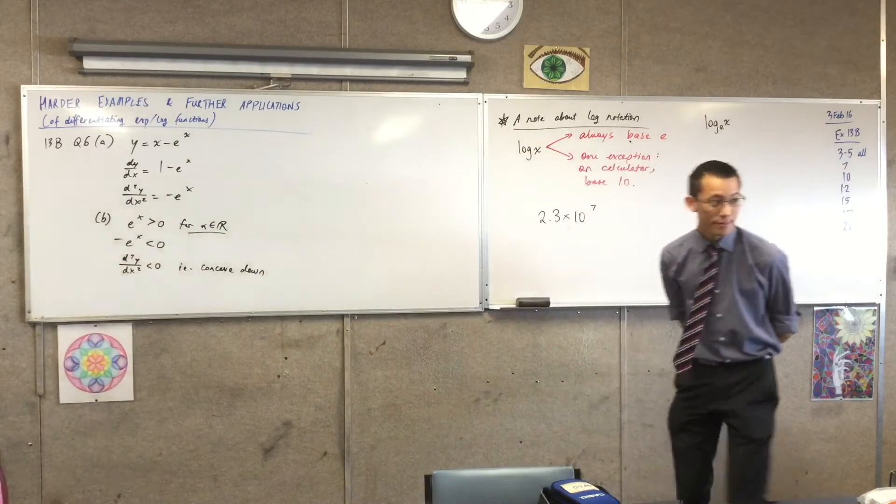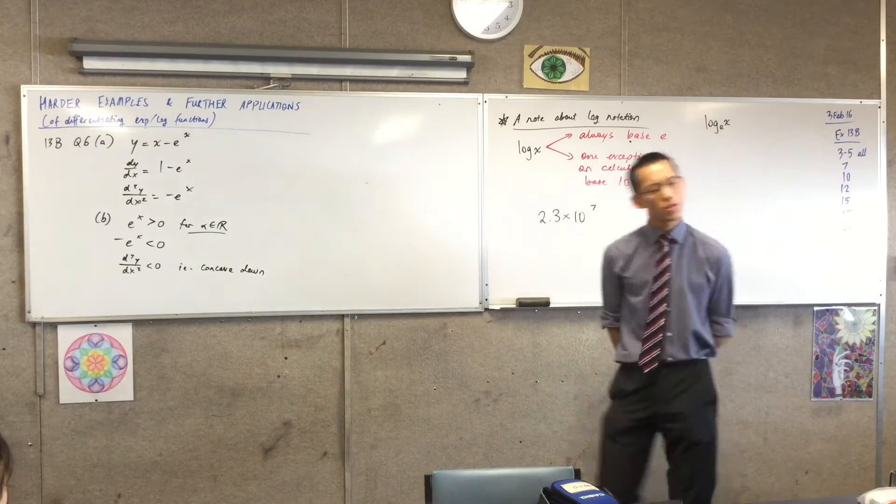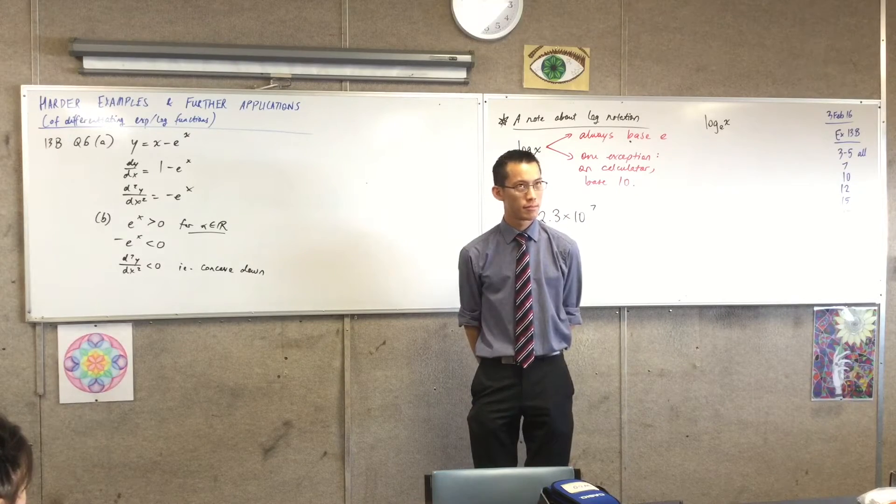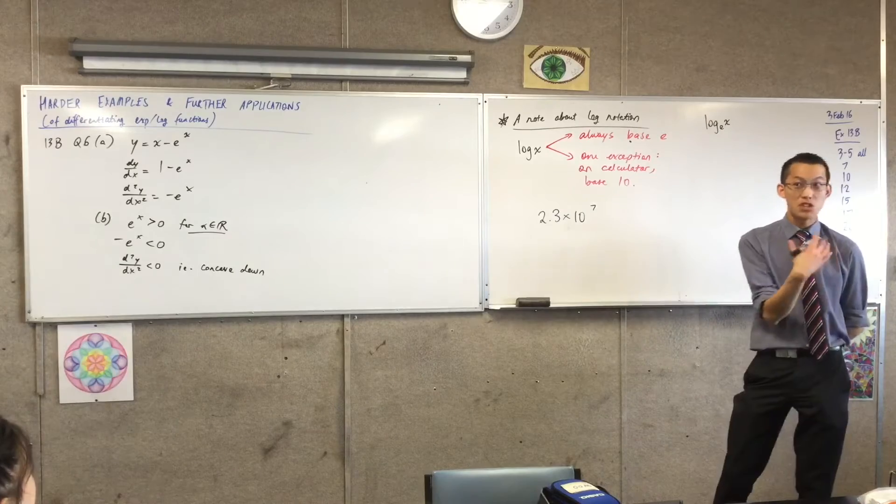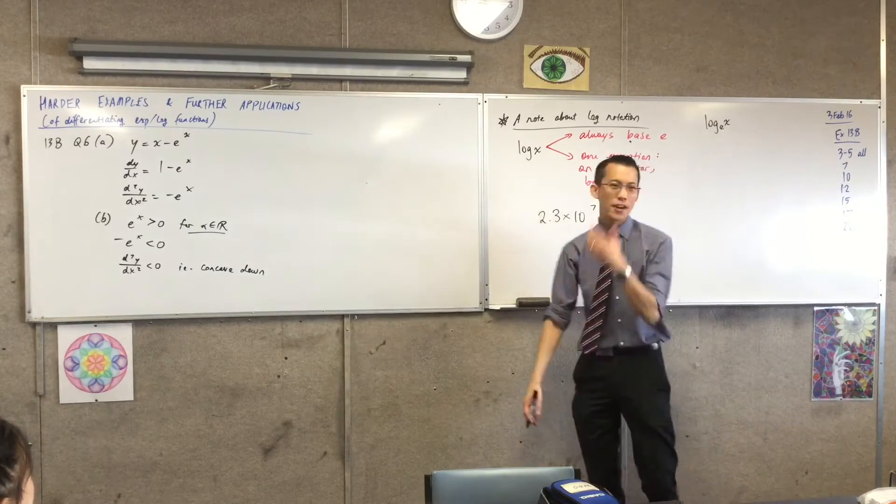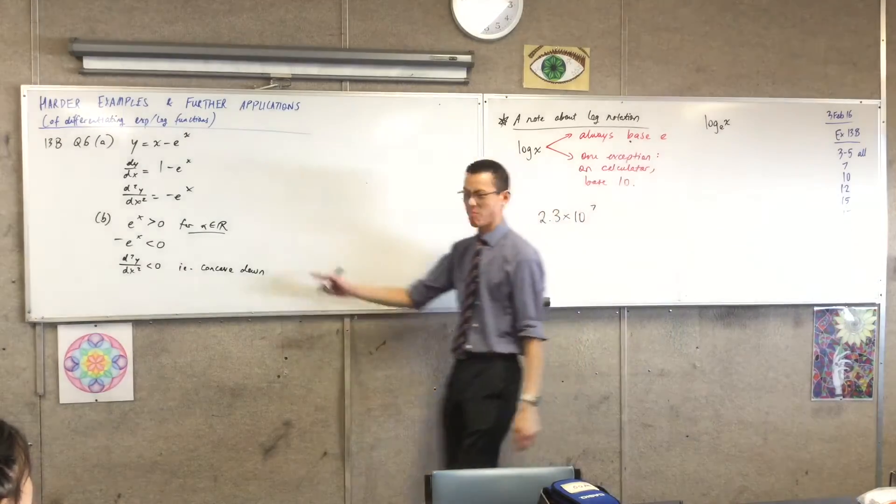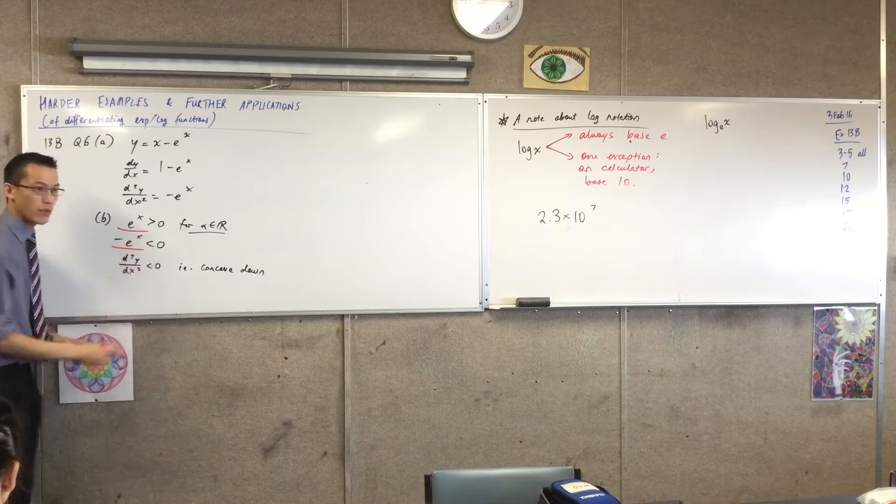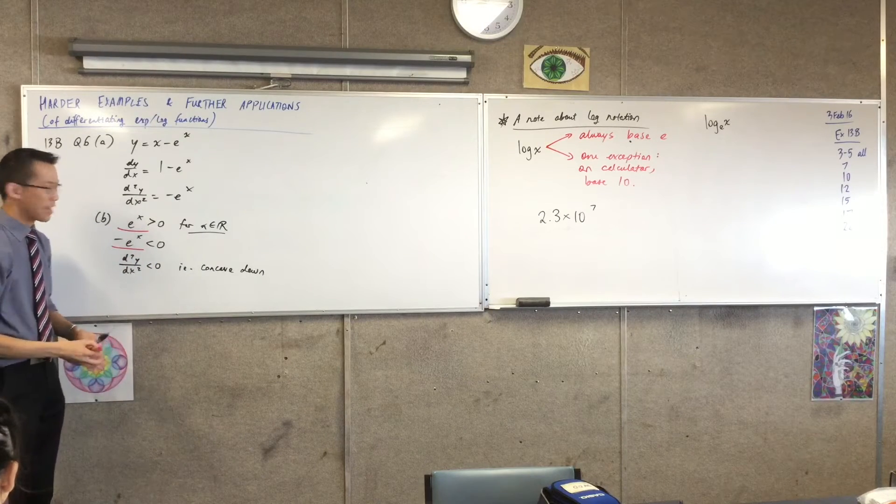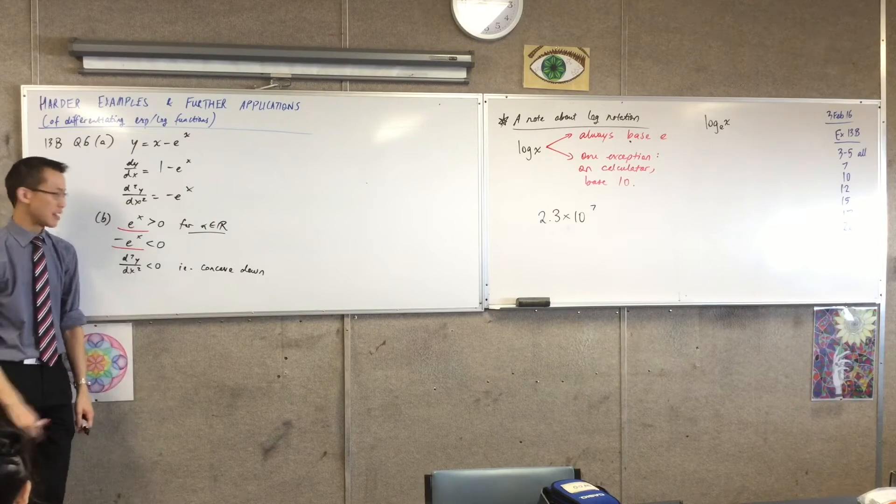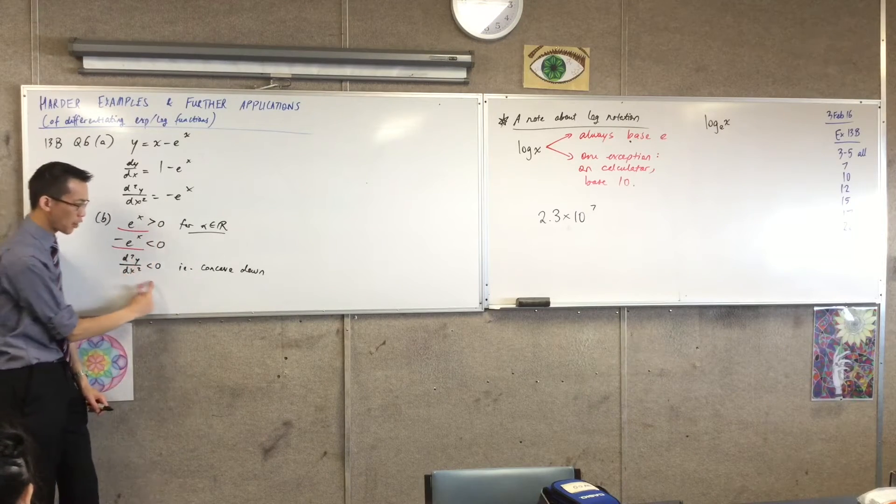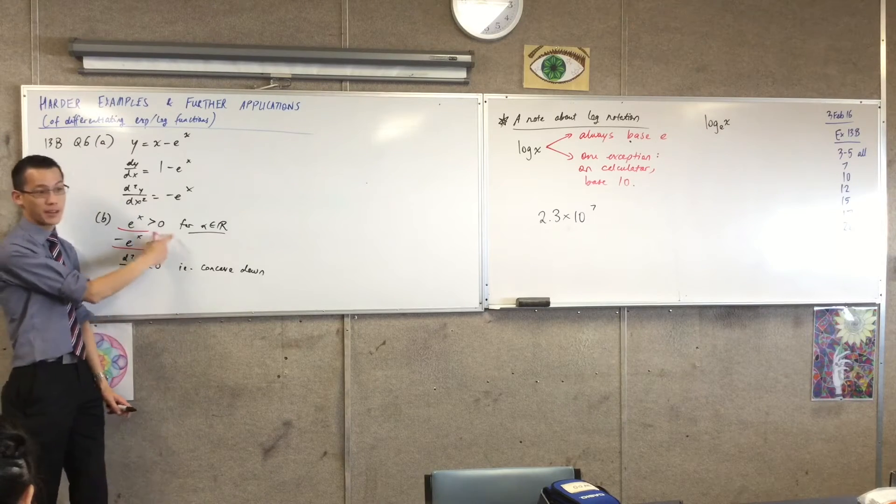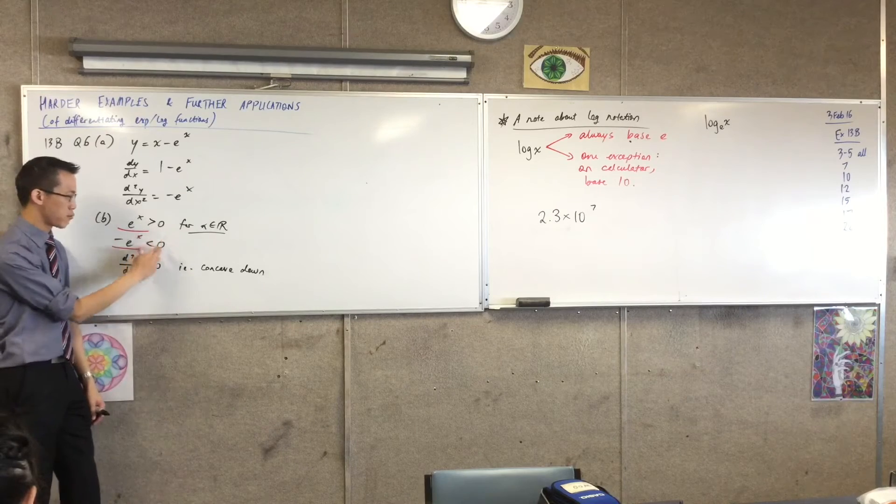Is there any problem with writing it in words instead of, like, f double prime x is always negative, or always concave down? There's nothing instrumentally different between what I've said and what you've said. However, I would like something like this. I would particularly like some kind of reference to what the actual second derivative is. Because, suppose I don't know anything about the exponential graph, right? Suppose I actually did not know this fact. I could kind of conclude this just by reading the question. Like, and not actually demonstrating,